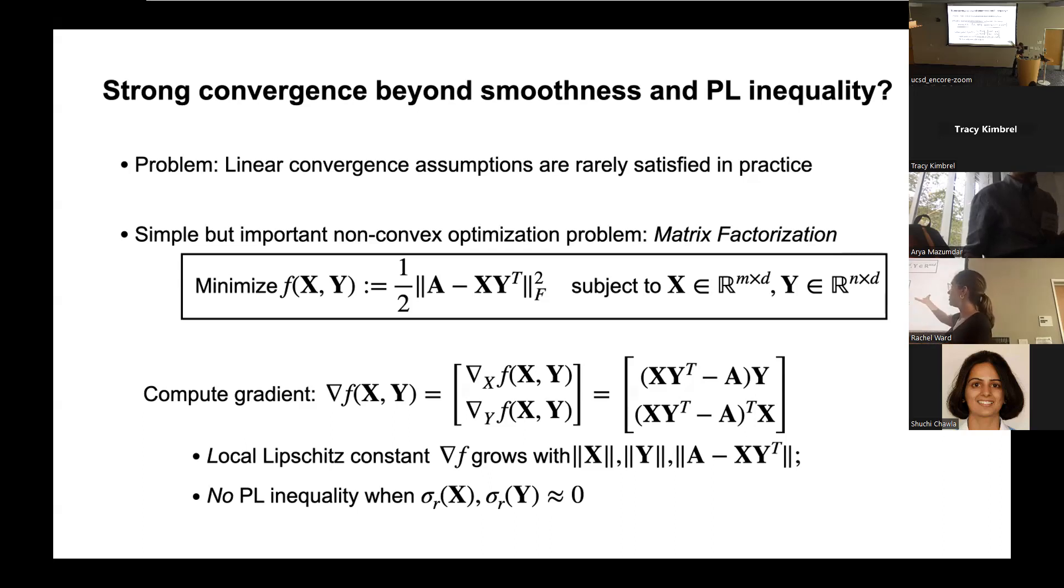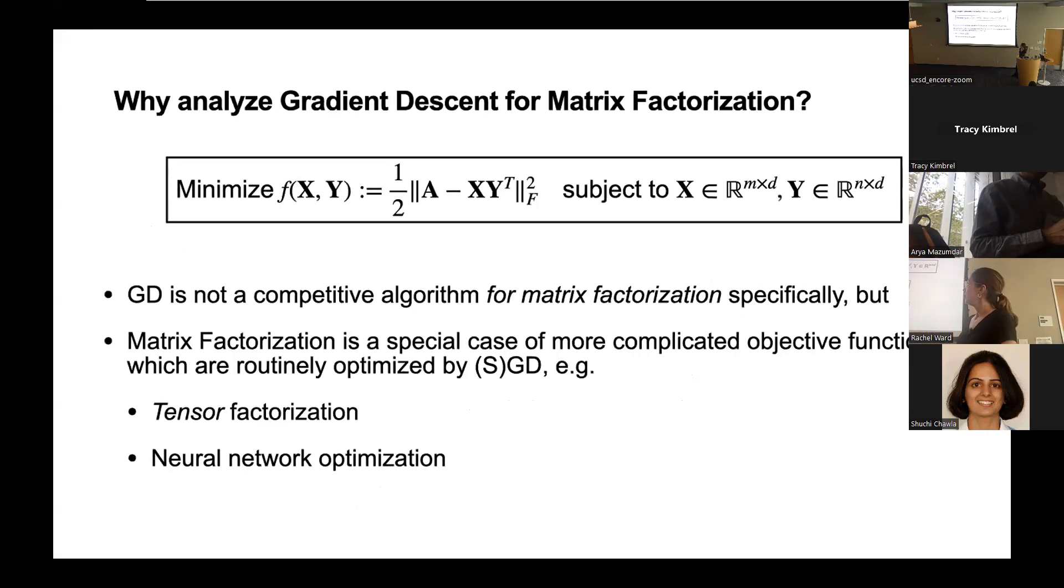It's quite easy to see. You just compute the gradient of this loss function and observe by the structure of the gradient that the Lipschitz constant of the gradient must grow as the norms of the factors grow. So there's no global Lipschitz constant. And also the PL inequality collapses when X or Y has zero rth singular value. There's a saddle point at X equals Y equals zero. So you have no hope of converging to anything if you start there with gradient descent. Nevertheless, gradient descent seems to work very well in practice starting from a random initialization, sort of Gaussian random X and Y. So why?